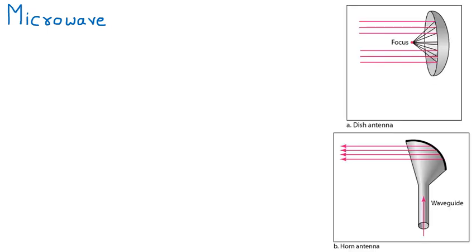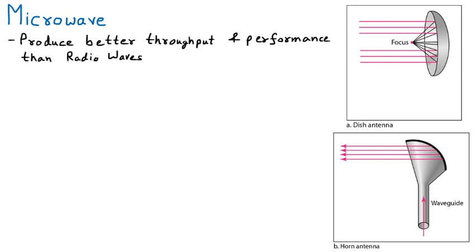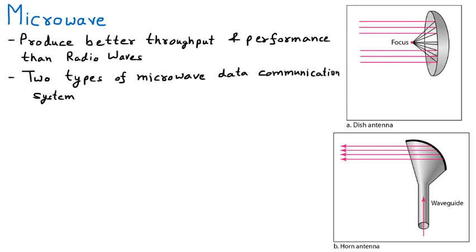We already have one example of microwave at our home, which is the microwave oven. To understand the microwave, we should understand a few facts. The first fact is that it produces better throughput and performance compared to the radio wave — meaning it performs better and can send more data at a particular time. There are two types of microwave data communication systems: terrestrial and satellite.